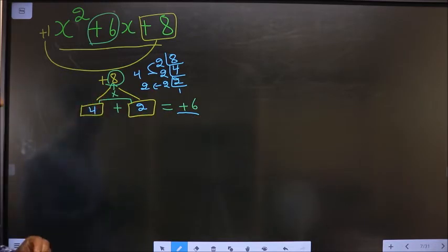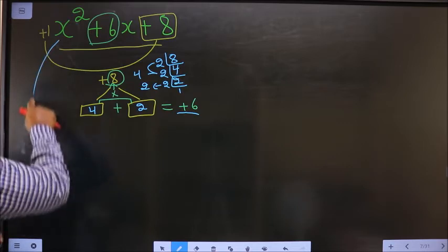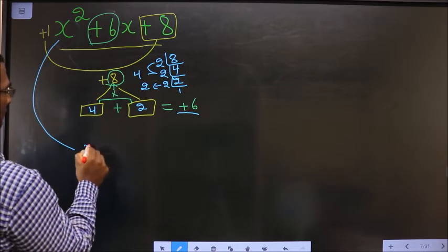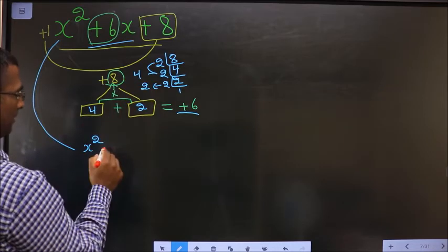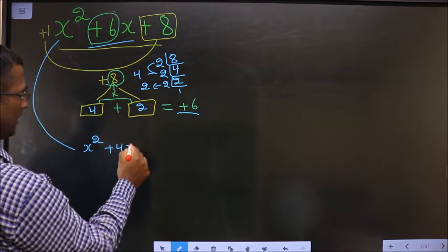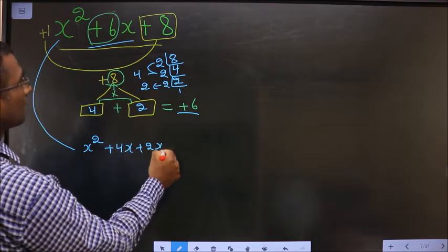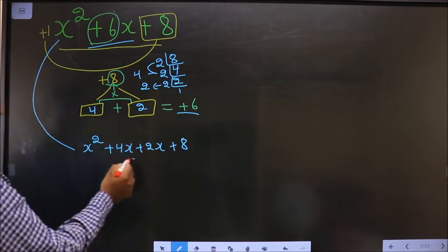4 into 2 is +8, so the signs are also adjusted. Now this will change to: in place of +6, I will be writing +4x + 2x + 8. What can I take common from these two?